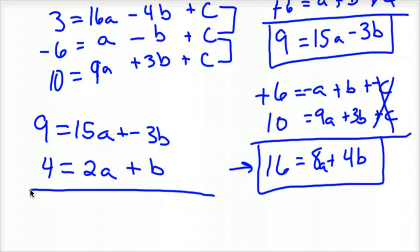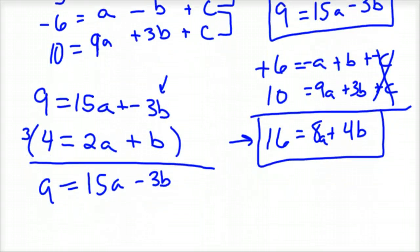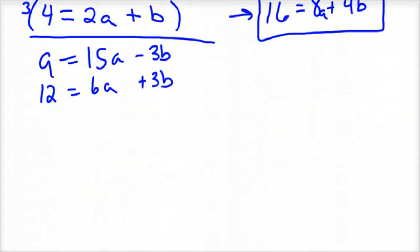And you won't make as many mistakes if you do that. So I'm going to match up my b's now and eliminate them. So I need to multiply this bottom equation by 3. And so I'm going to rewrite my top equation. So 9 equals 15a minus 3b. And you wouldn't have to do this, but I'm just showing all of my work. So I don't leave anything to question. And then the bottom equation is 12 equals 6a plus 3b. And now we're ready to eliminate.